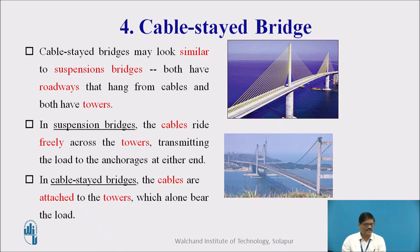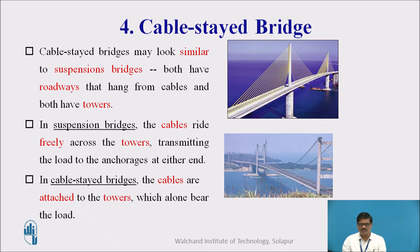The fourth type is a cable-stayed bridge. In a cable-stayed bridge, the load transfer mechanism is quite different from the suspension bridge. Cable-stayed bridges may look similar to suspension bridges — both have roadways hung from cables and both have towers. However, there is a key difference: in a suspension bridge, the cables ride freely across the towers, transmitting loads to the anchorages at either end, whereas in cable-stayed bridges, the cables are attached directly to the towers, which alone bear the load.